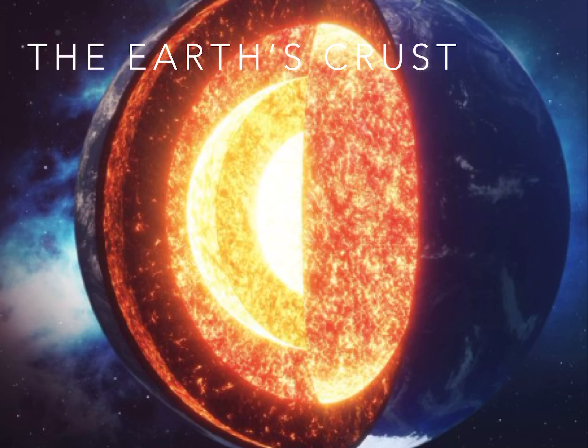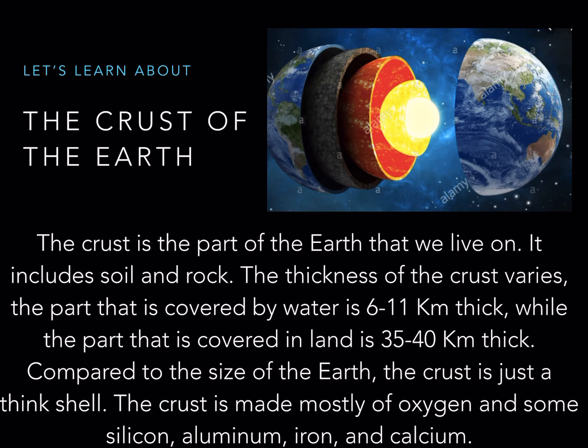The crust is the part of the earth that we live on. It includes soil and rock. The thickness of the crust varies. The part that is covered by water is 6 to 11 kilometers thick, while the part that is covered in land is 35 to 40 kilometers thick.